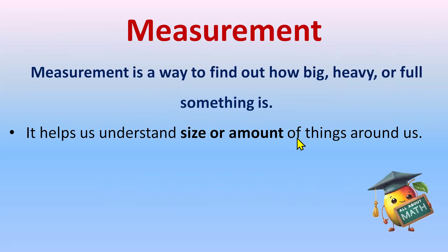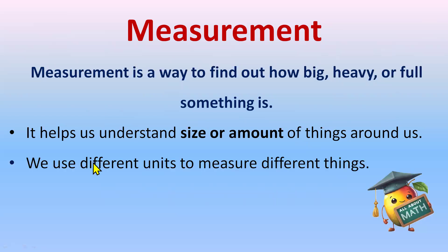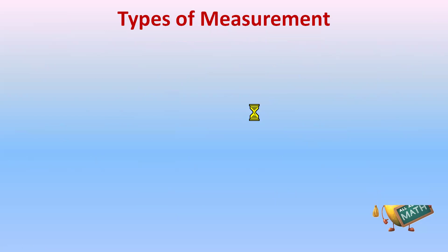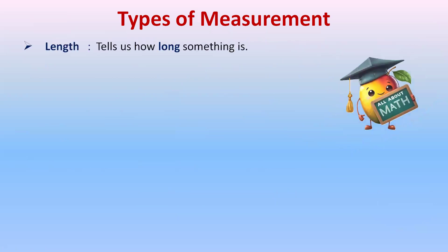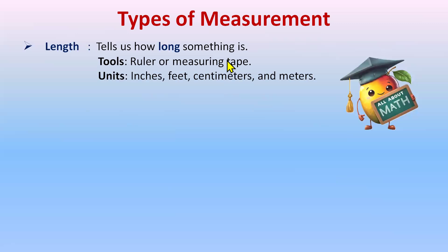We use different units to measure different things. The first type of measurement is length, which tells us how long something is. The tools to measure length are the ruler or the measuring tape.